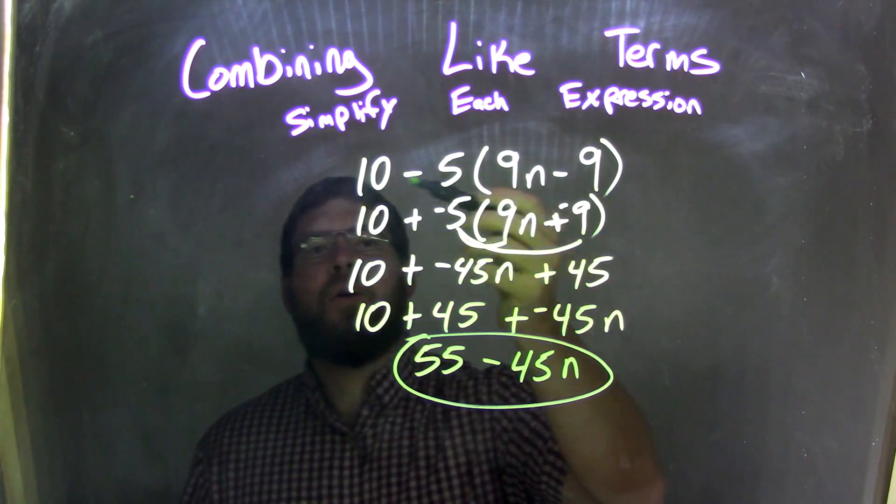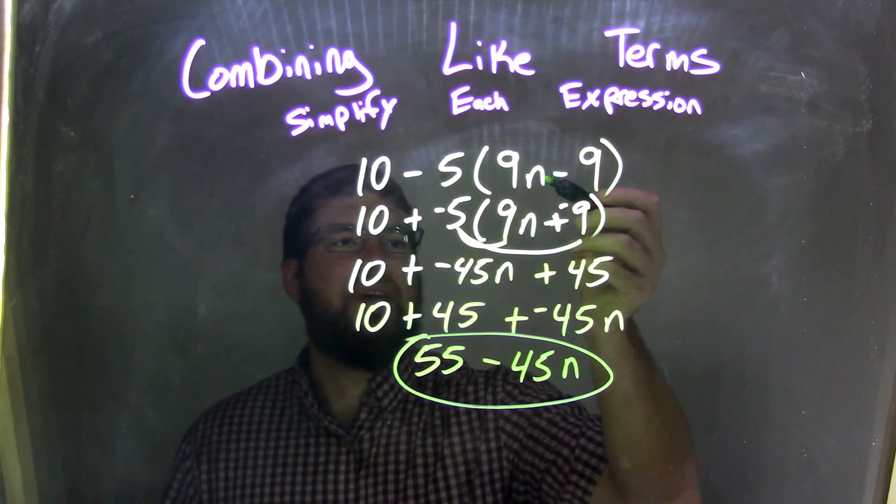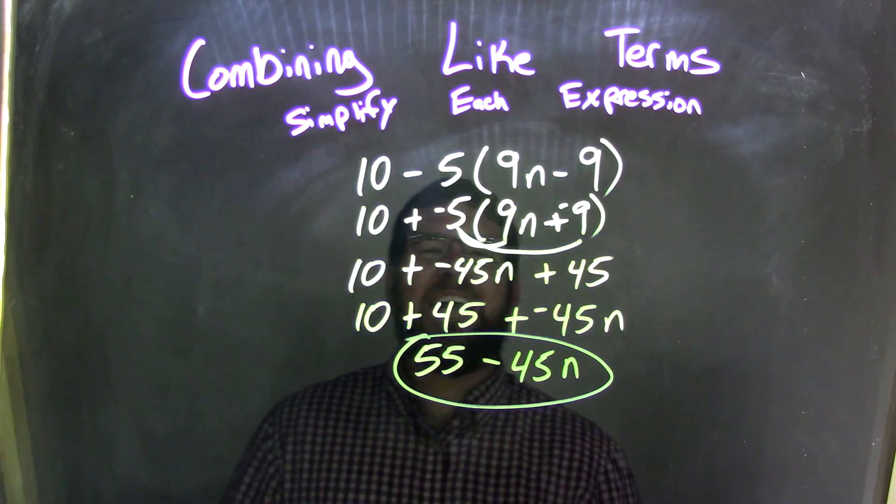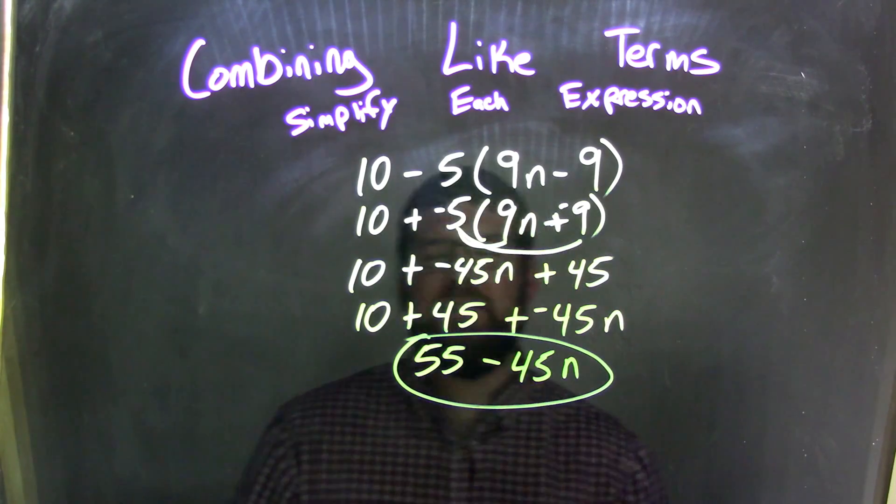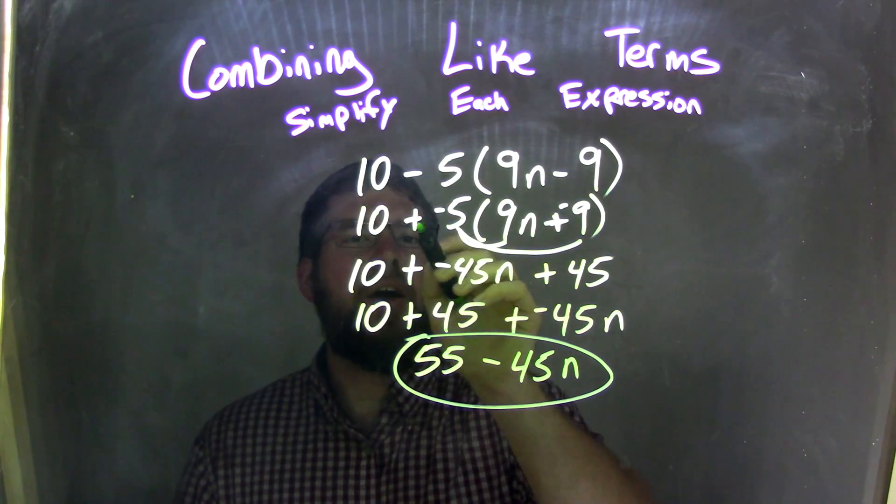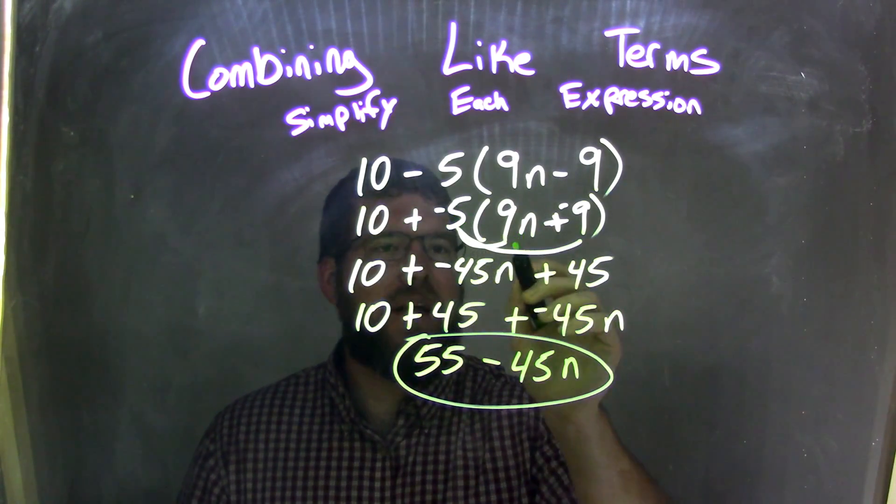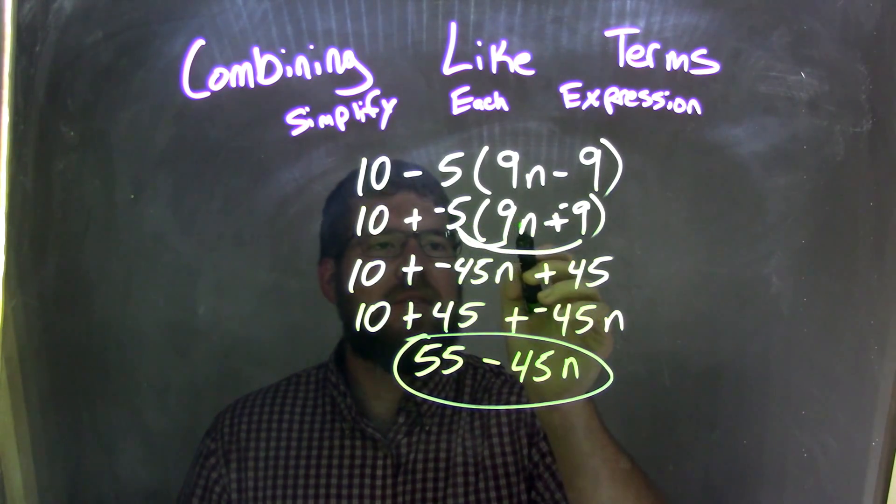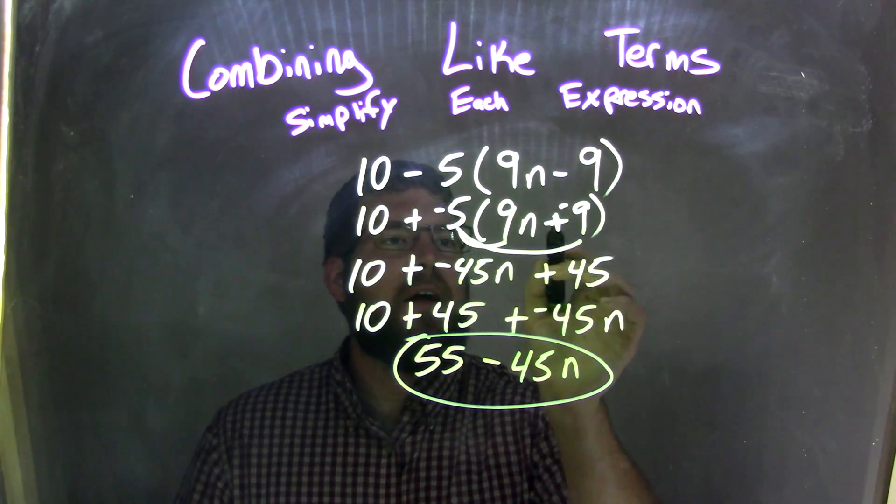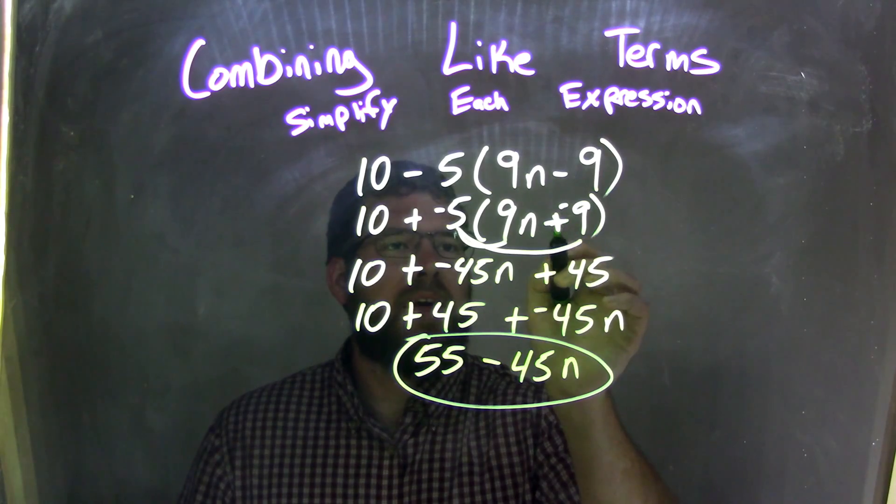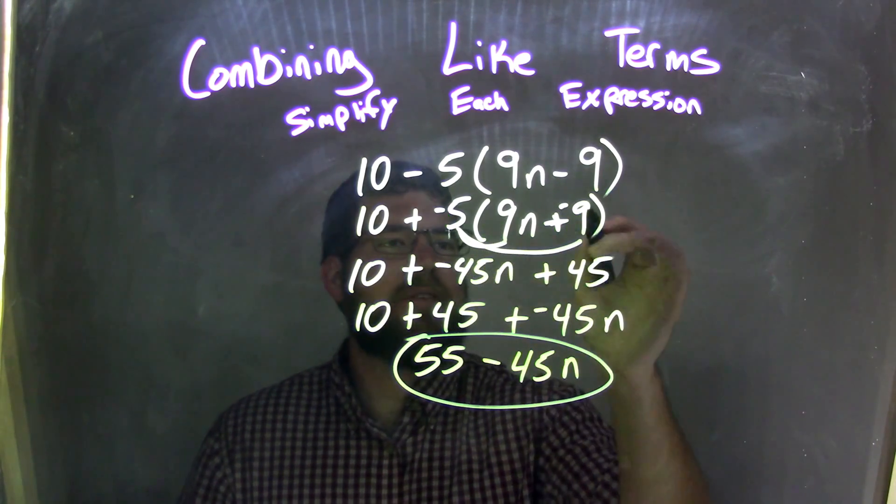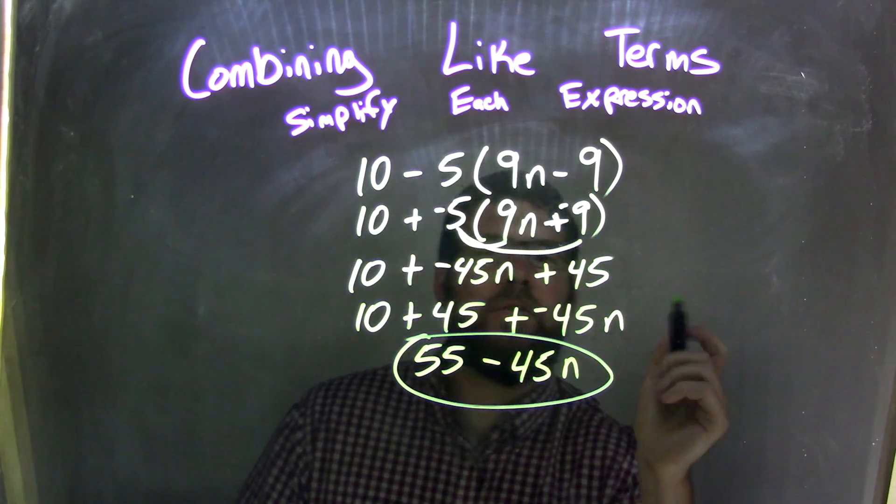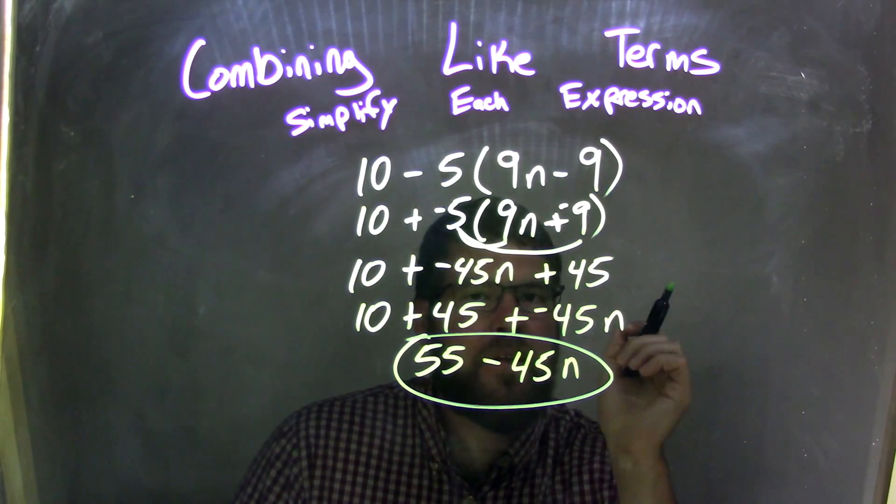So let's recap. We started with 10 minus 5 times 9n minus 9. I knew that subtracting the 5 is the same thing as adding a negative, so I wrote 10 plus negative 5. Then I distributed that negative 5. Negative 5 times 9n is negative 45n. That minus 9, I made it plus a negative 9. So negative 5 times negative 9 is a positive 45. Two negatives multiplied is a positive.